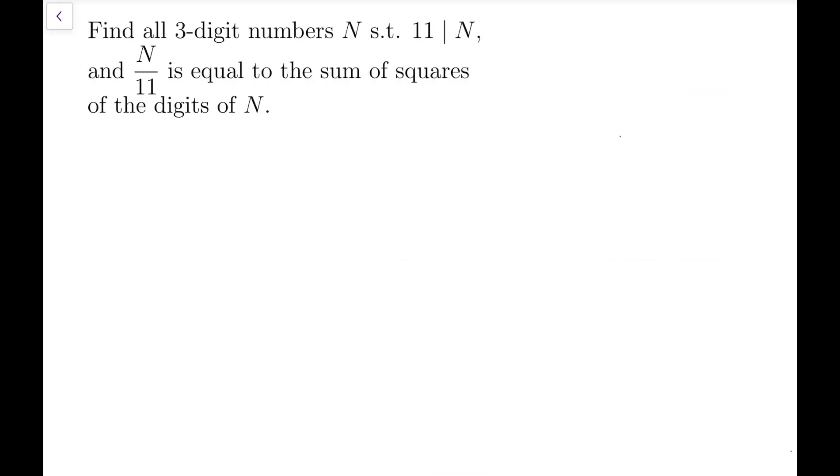When I first saw the fact that N is a three-digit number, I would immediately rewrite N in its expanded form in base 10. If the digits are a, b, and c, then I will write N to be a times 100 plus 10 times b plus c.